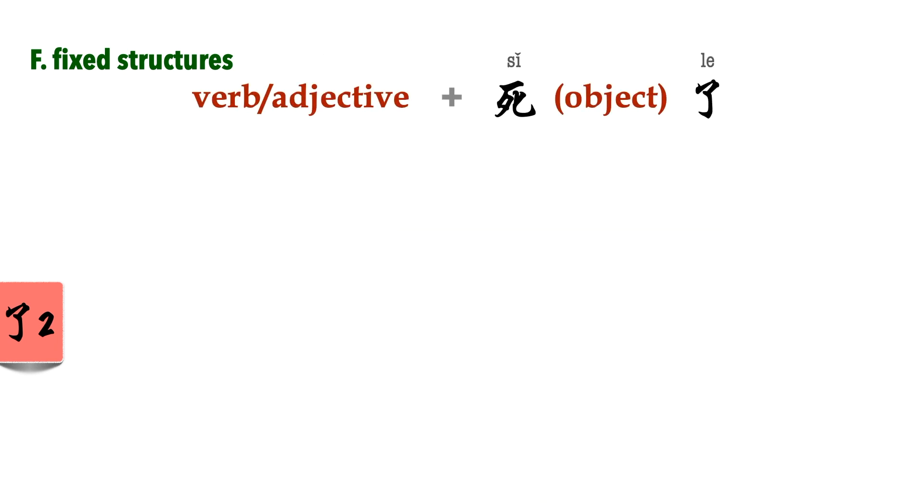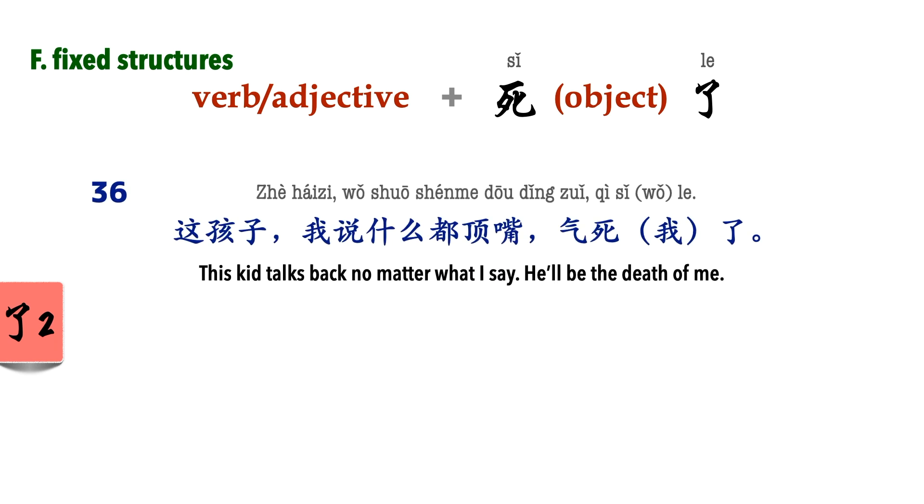Something 死了. This is very similar to 太 something 了, except that it's a lot more colloquial and has a stronger intensity. It literally means something to death, and can mean so, but often we use it just for exaggeration. Compared to 太 something 了, something 死了 mostly has negative connotations, but sometimes to express intensity, it can also be used in a positive way. 这孩子,我说什么都顶嘴,气死我了. 今天终于看到偶像,开心死了.